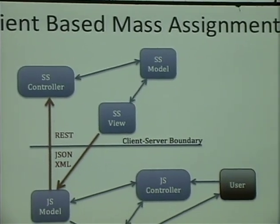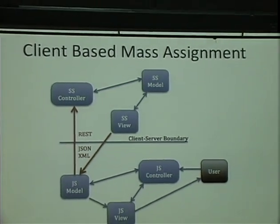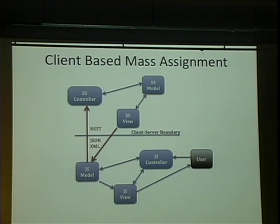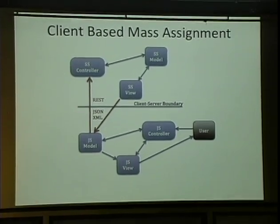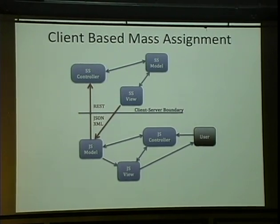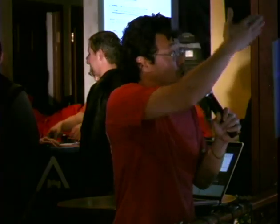Let's talk about client-based mass assignment. Client-based mass assignment exists because JavaScript frameworks are coming out, and when you create applications with a bunch of JavaScript it turns into spaghetti code fast. Developers are familiar with MVC on the server and say, I'll just put the same pattern on the client. In JavaScript, you have JavaScript models, controllers, and views. All that's passed between client JavaScript and server components is JSON and XML. The client model is a mirror image of the server model, so the same attacks used for the server can be done on the client.